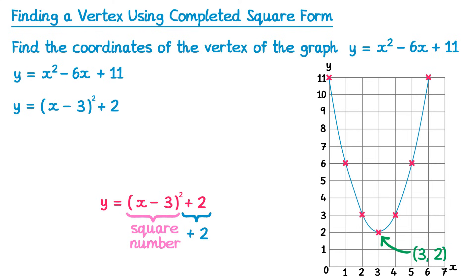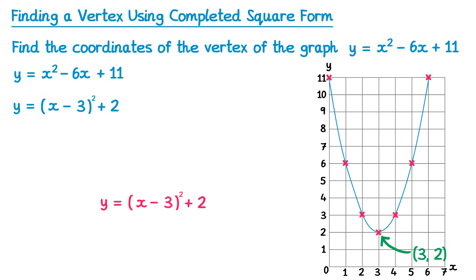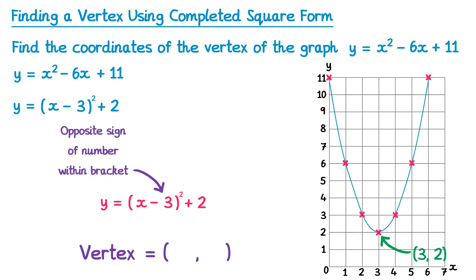What x coordinate gives us that minimum? When we substituted x equals 3, that was the key value because 3 take away 3 gave us 0, and 0 squared is 0. Looking at the completed square form, to find the vertex: first look at the bracket part — we want it to equal 0. To make it 0, choose x as the opposite sign of the number within the bracket. Since the number inside is negative 3, we choose x equals 3. If it were negative 10, you'd choose 10; if it were positive 5, you'd choose negative 5. The final term — just keep it as your y coordinate. So if it's plus 2, the y coordinate is 2.